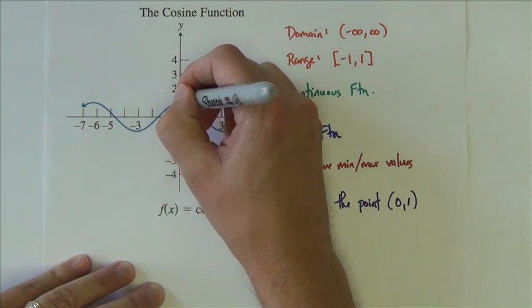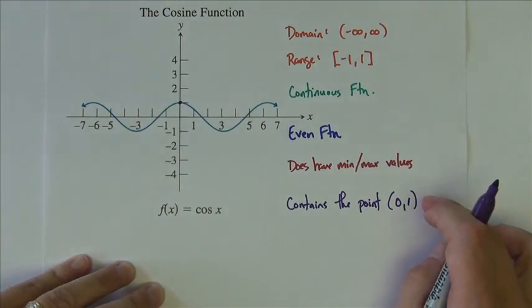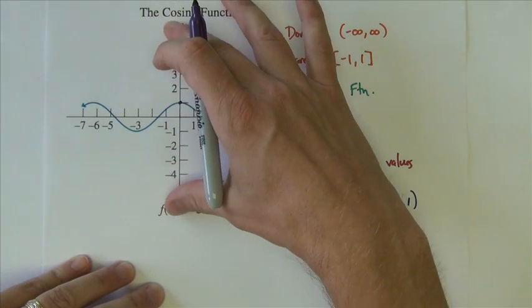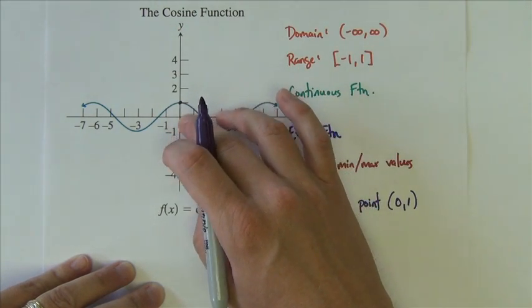Of course, this is just in a general sense, if it slides left and right, then that could not be an accurate statement. If it's got some stretching going on, it may contain another point here on the y-axis. But in general, it doesn't go through the origin.